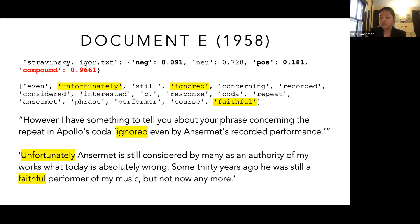Document E is a letter written by Stravinsky himself, and it has an interesting position on the graph because it is isolated from other points above the line y equals x. Analyzing the text using the word distribution function reveals an unexpected and rather strong negative sentiment toward the way Apollo had been performed. This highlights the faithfulness with which Stravinsky expects his pieces to be performed. We can contrast the usage of the term 'wrong' in Document C — written by Messiaen, who uses it to describe Stravinsky's style — versus Document E, where Stravinsky uses 'wrong' to condemn a conductor's actions.